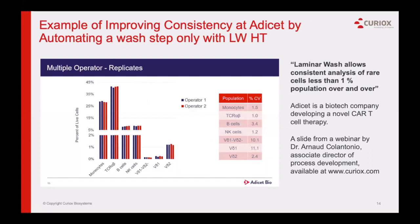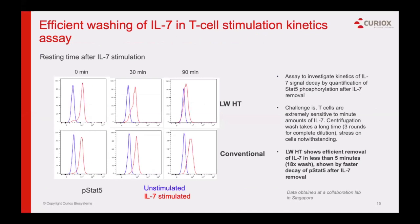This slide from Addisat, a small company in the Bay Area, shows they were very interested in reproducibility between operators. Between two operators, we can see enhanced consistency, especially among rare cell populations. Finally, laminar wash technology shows efficient removal — compared to centrifugation, it shows very efficient removal of a stimulant, in this case IL-7, in less than five minutes. This is shown by the faster decay of PSTAT-5 after IL-7 removal compared to centrifugation.